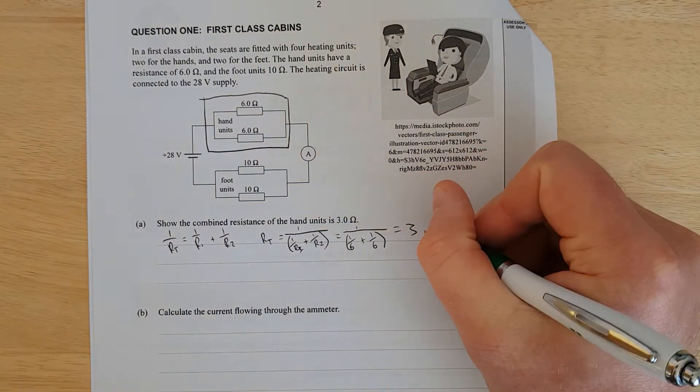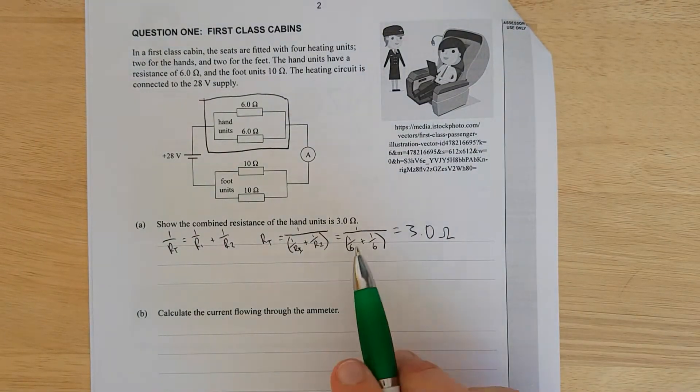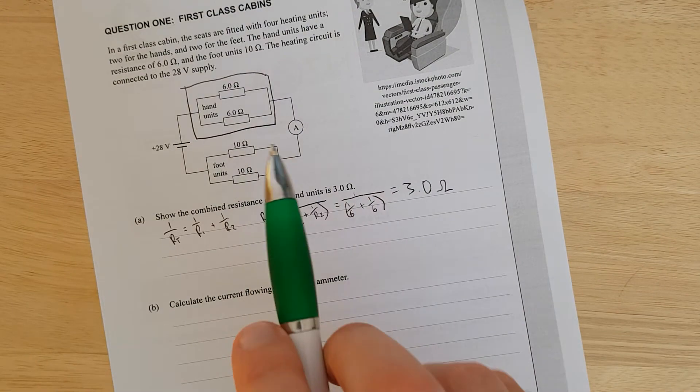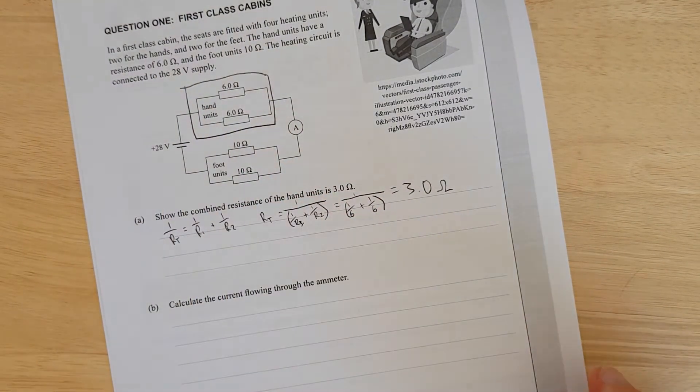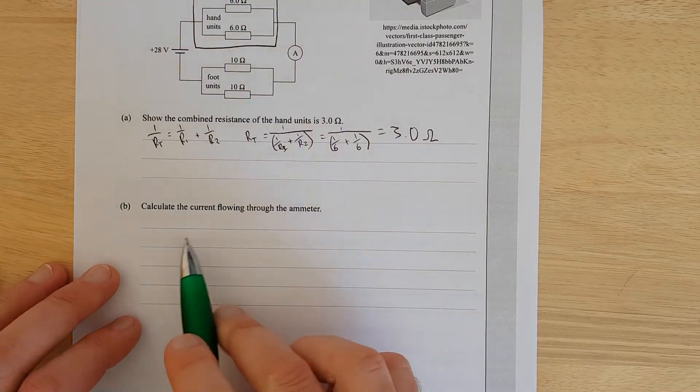So that equals 3.0 ohms, and because it's 2 significant figures, your answer should be 2 SF. Calculate the current flowing through the ammeter.